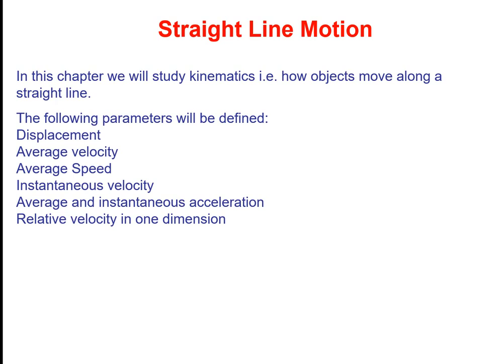In kinematics, we never talk about the cause of motion. We discuss only the motion itself — what is the distance and displacement covered by an object, in how much time, and how much distance is covered. The topics include: distance, displacement, average speed, average velocity, instantaneous velocity, average and instantaneous acceleration, and relative velocity in one dimension.